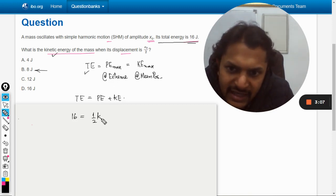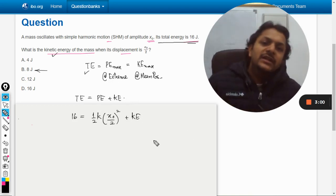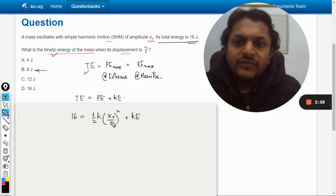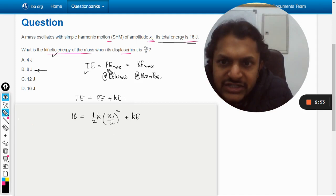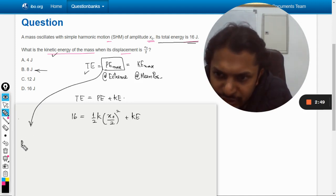Half k, in the place of x we would be taking x_naught by 2, this is square. But this is kinetic energy. Now the problem is we don't even know what is x_naught, that we have to find. You see, total energy, that is potential energy at extreme position, is given.